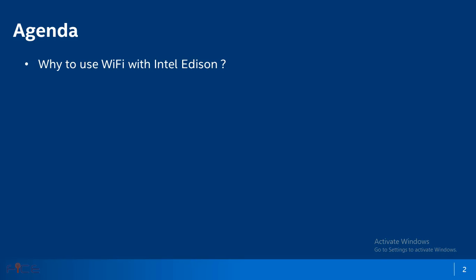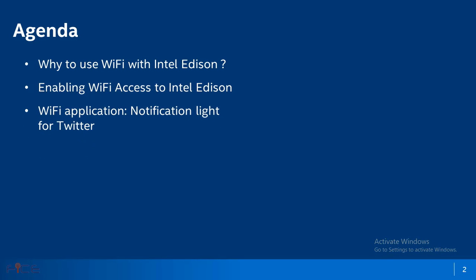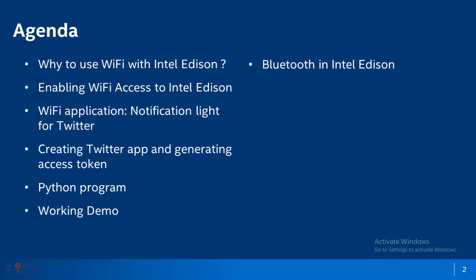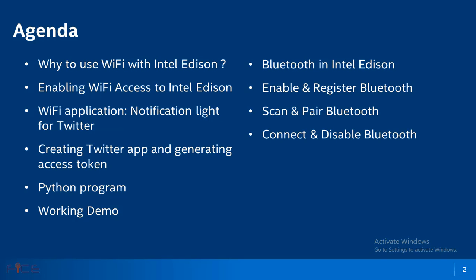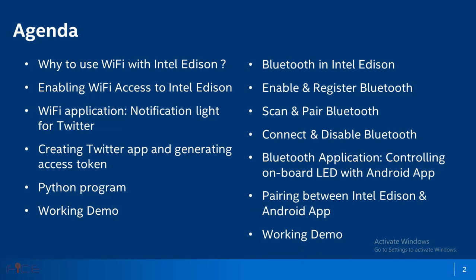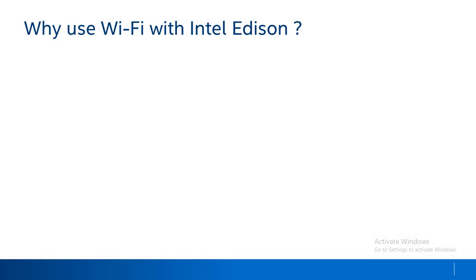Under this broad topic we would get to know about the steps needed to enable Wi-Fi access for Intel Edition. We would also implement a case study on notification light for Twitter, discussing the Python program and seeing a working demo. The second key area is enabling and accessing Bluetooth in Intel Edition boards, including the built-in Bluetooth Low Energy module, and how to enable, register, scan, pair, connect, and disable built-in Bluetooth. We would also implement a case study on regulating onboard LED status with an Android app.